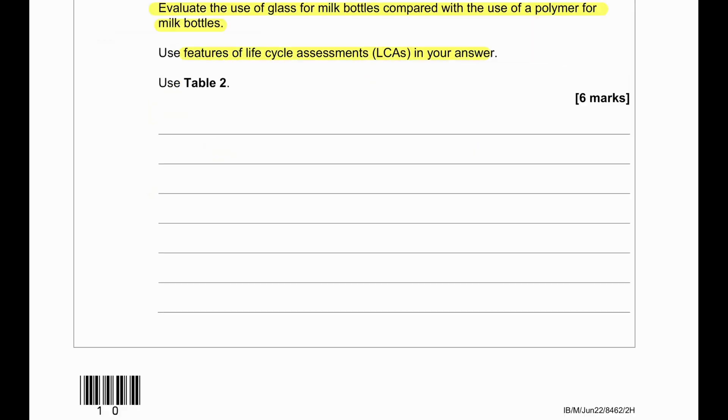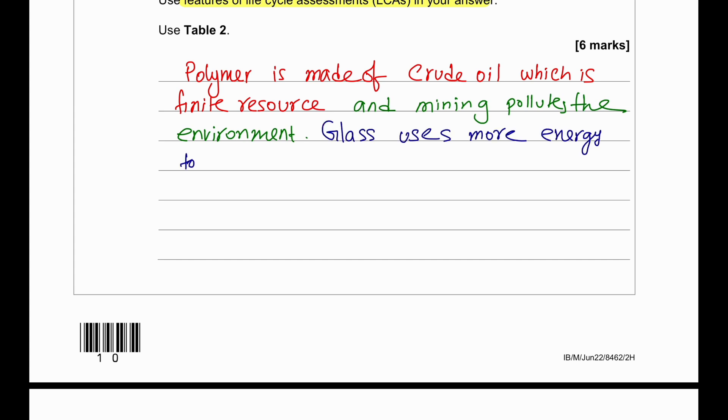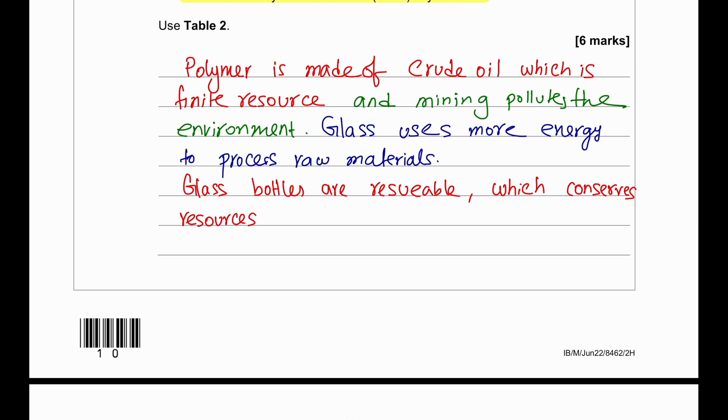We need to use the features of life cycle assessment in our answers. First of all, in terms of answering we need to talk about the crude oil. Since the polymer is made from crude oil, we know that crude oil is a finite resource and mining it pollutes the environment. Whereas the problem with glass is that glass uses more energy to process the raw material, which in turn uses crude oil as the energy input. Glass bottles are reusable. When they are reused, they can conserve the natural resources that the glass is made from. Reusing glass up to 25 times also has a problem - it needs to be washed and water and energy is consumed during washing.